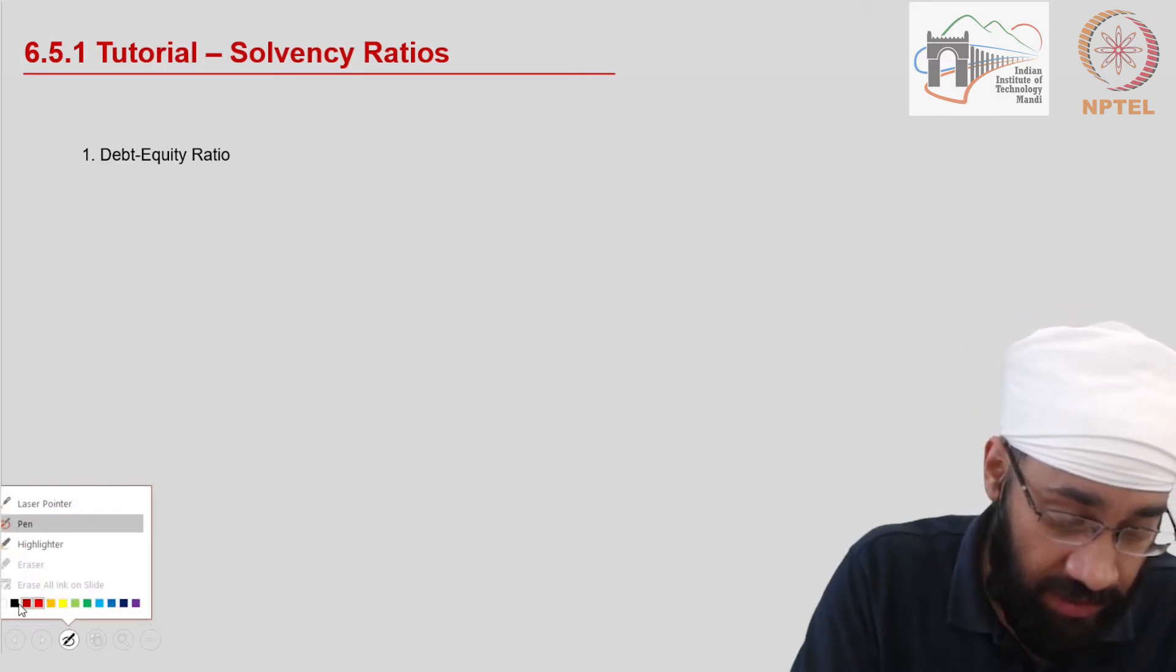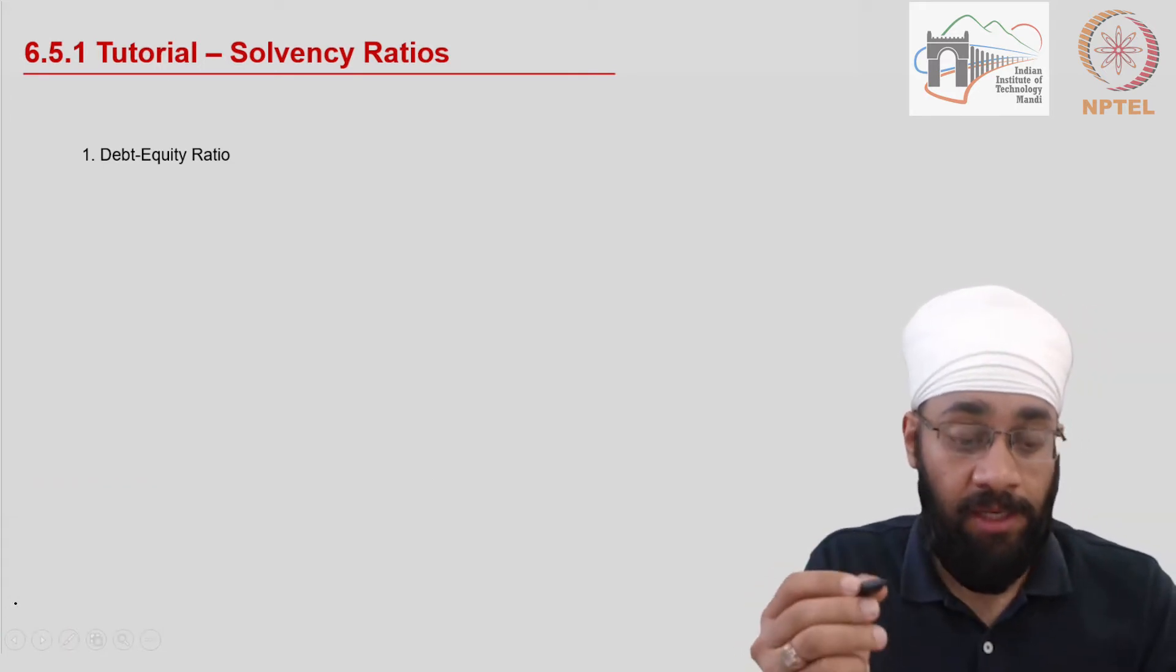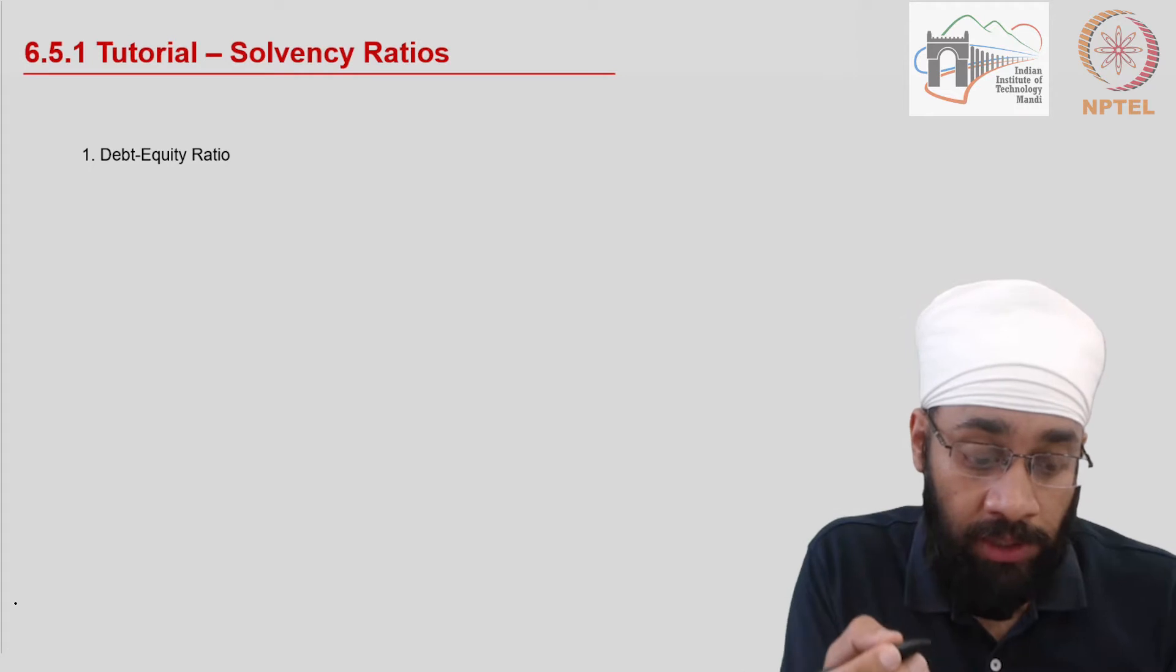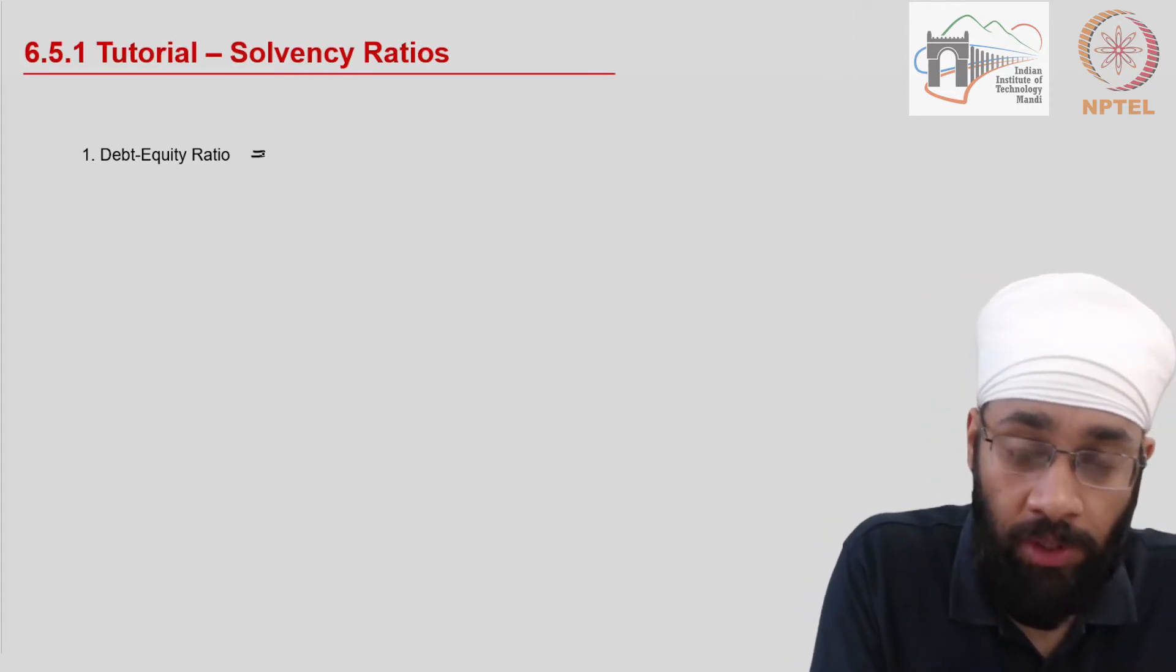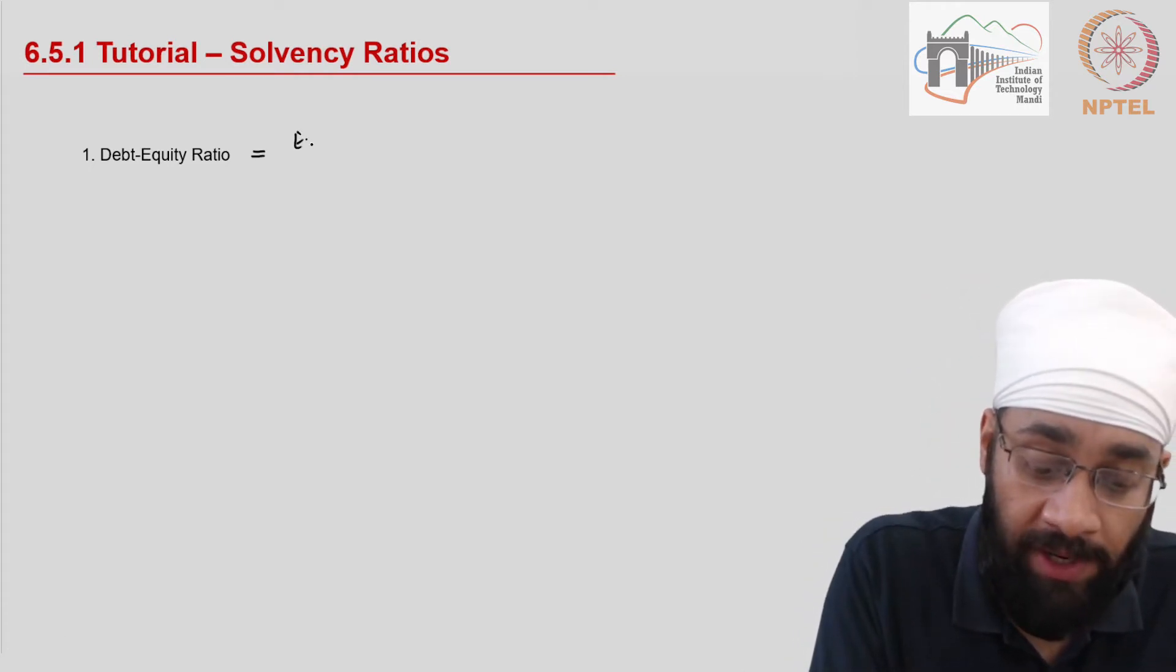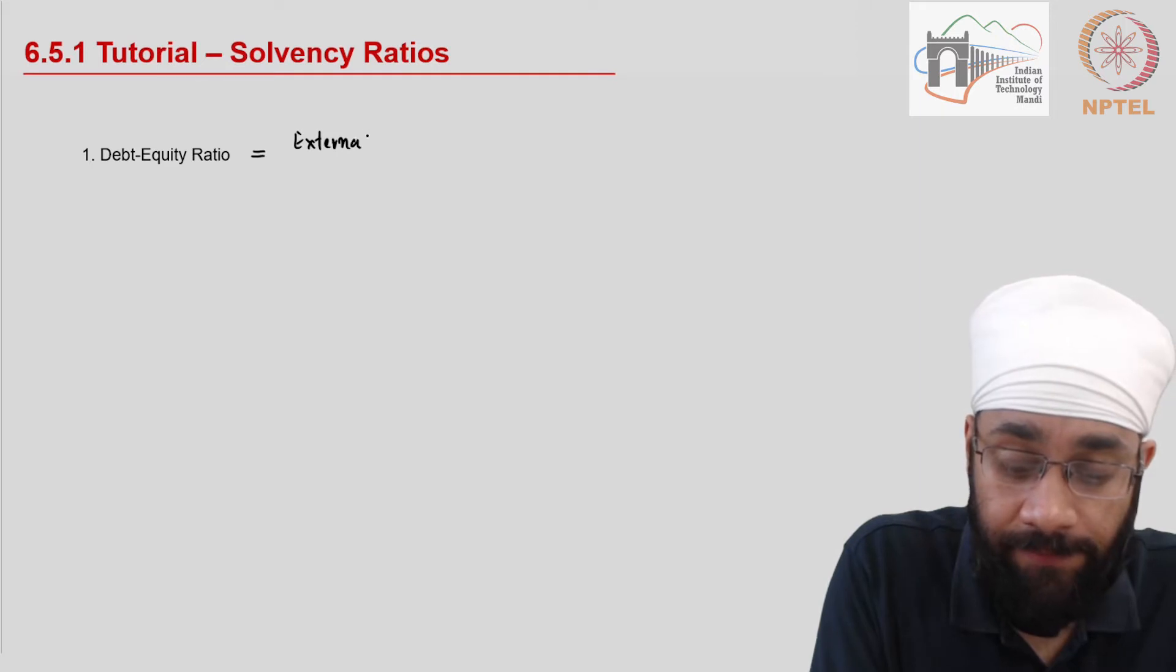The first ratio, the first indicator that we are interested in is called debt to equity ratio. The debt to equity ratio is equal to external liabilities divided by the internal liabilities.